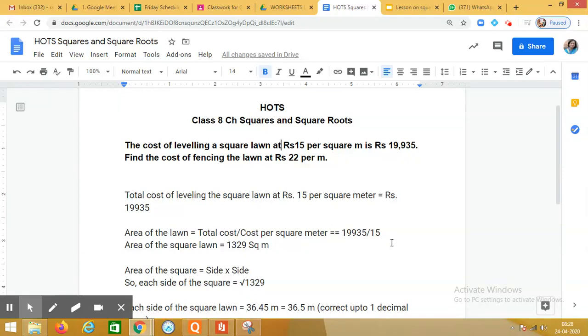Dear students, today I am going to discuss with you one question from higher order thinking skills problems given in the chapter squares and square roots. The question is, the cost of leveling the square lawn at rupees 15 per square meter is rupees 19,935. Find the cost of fencing the lawn at rupees 22 per meter.